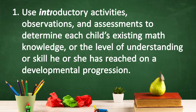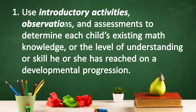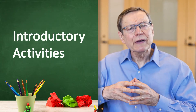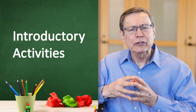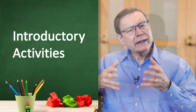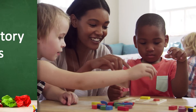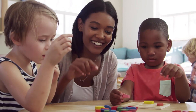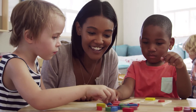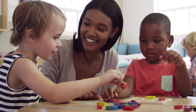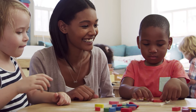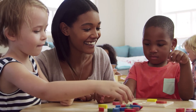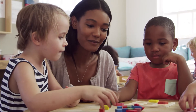The first way to carry out Recommendation 3 is to determine each child's existing math knowledge using introductory activities, observations, and assessments. Introductory activities provide teachers the opportunity to assess a child's understanding of a new concept and what they can do independently. For example, at the beginning of the year, inviting each small group of children to play with instructional manipulatives such as a rich set of shapes or counters achieves multiple goals.